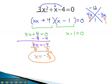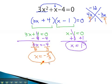To find our other possible answer for x, we solve the other equation by adding 1 to both sides to get x equals 1. If x is either 1 or negative 4 thirds, the original equation, when worked out, will equal 0.